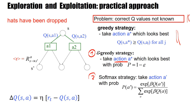Another strategy is the softmax strategy. During the learning procedure, the Q values change all the time. You favor the action which has the highest Q value in a form that's e to the beta times Q of A-prime, normalized by the sum of e to the beta Q of A over all other actions. Beta is a parameter — often beta is taken equal to 10, which strongly favors the best action. Sometimes people take beta equal to 1 or 2; it's a parameter that's up to you.